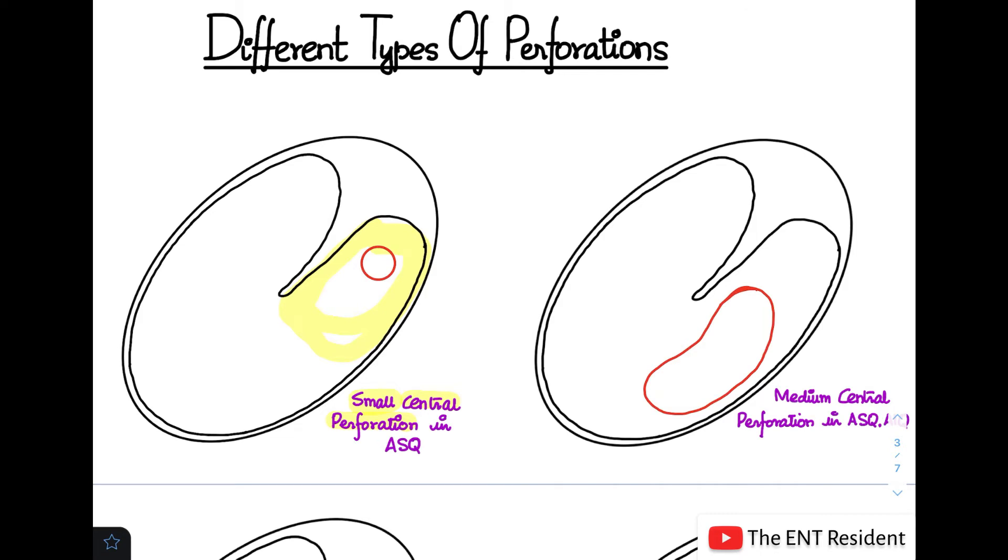Next, in the second picture, you can see a medium central perforation involving the anterosuperior and anteroinferior quadrants. This here is a perforation, and as you can see, it is involving both the anterior quadrants.